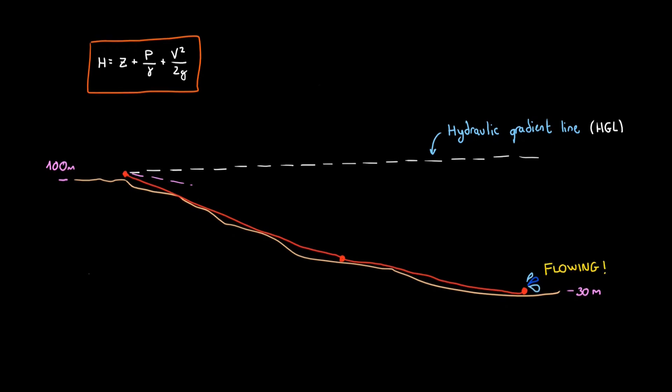When water starts to move, it loses energy to friction, and this makes the hydraulic gradient line slope down. The more friction inside the pipe, the more energy that is lost as heat, and the bigger the downward slope.